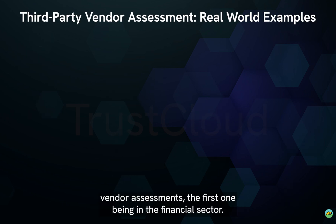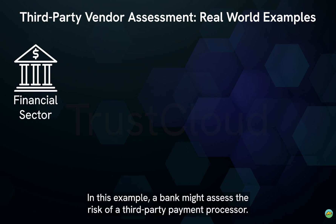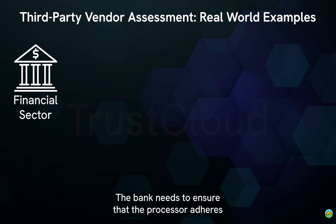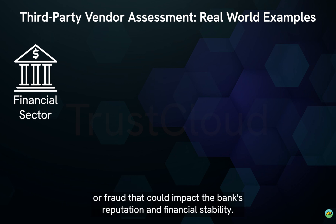Now we're going to go over real-world examples of third-party vendor assessments. The first one is in the financial sector. In this example, a bank might assess the risk of its third-party payment processor. The bank needs to ensure that the processor adheres to security standards and complies with regulations to avoid data breaches or fraud that could impact the bank's reputation and financial stability.